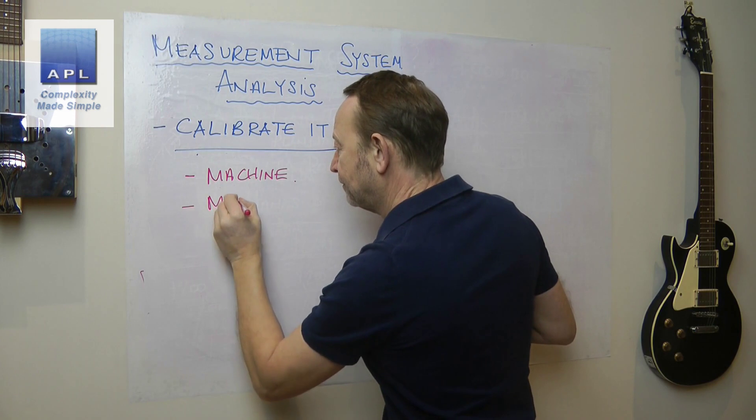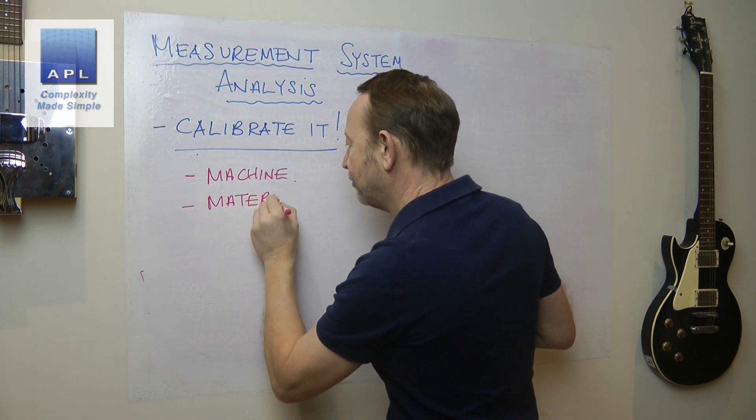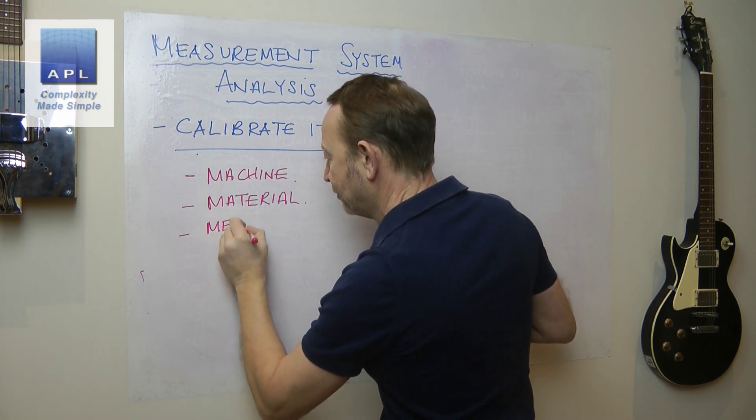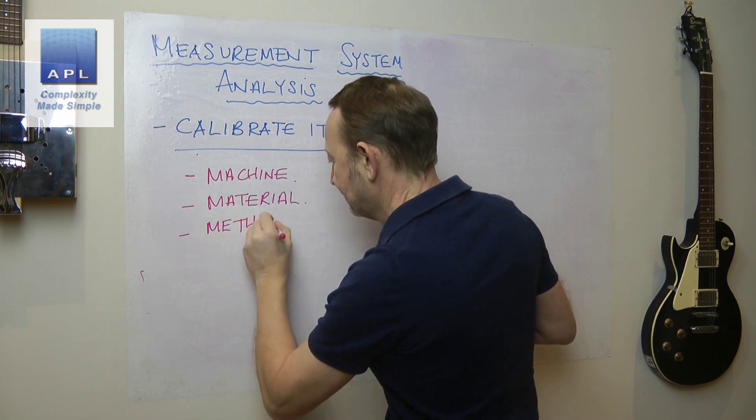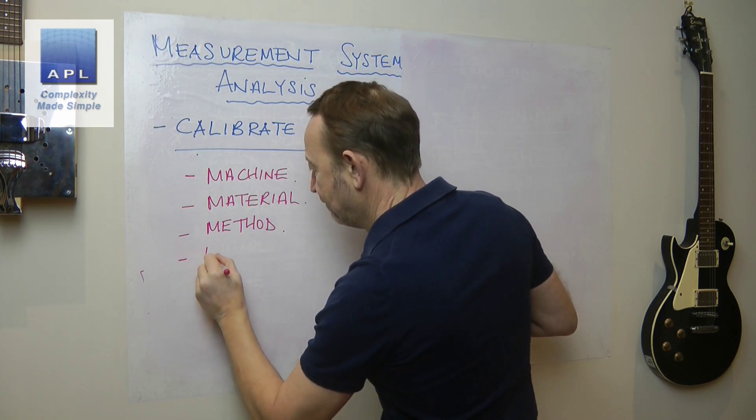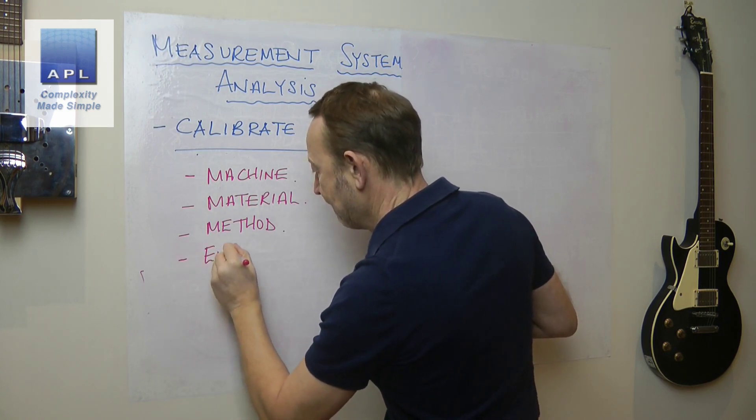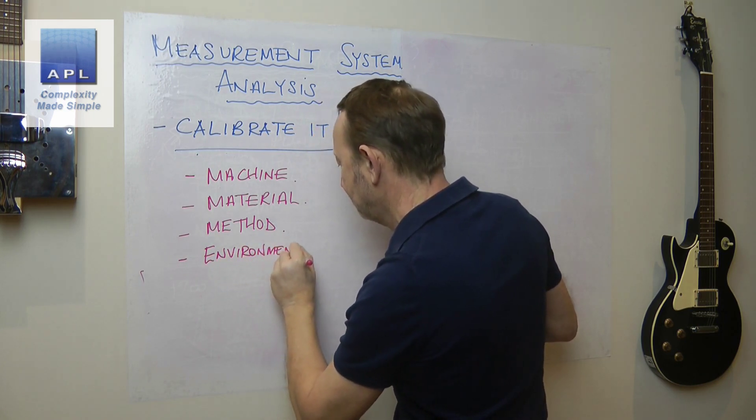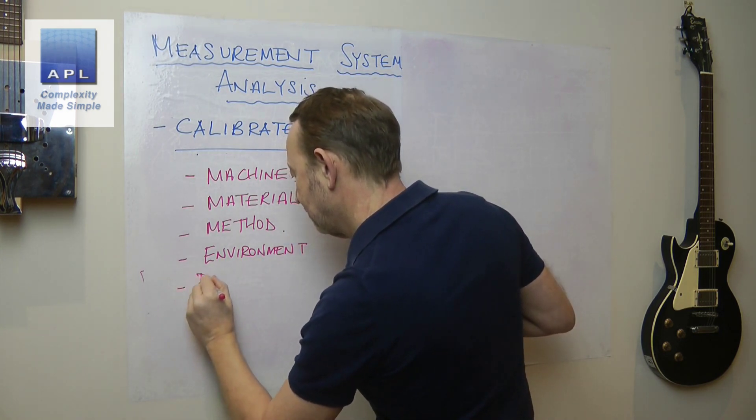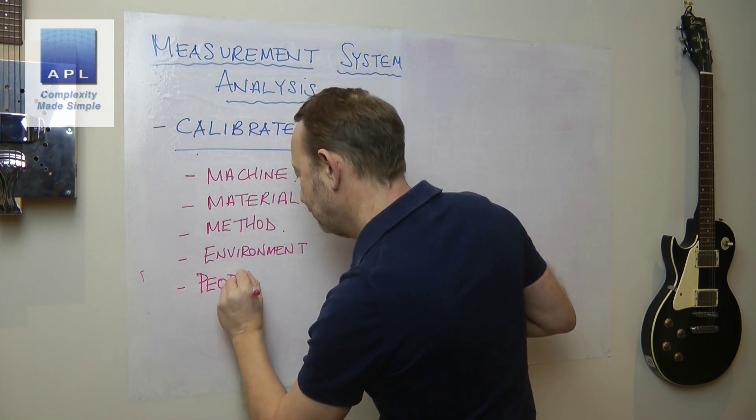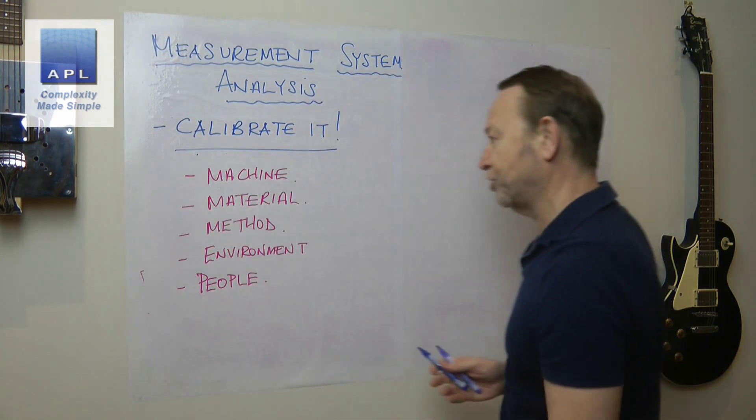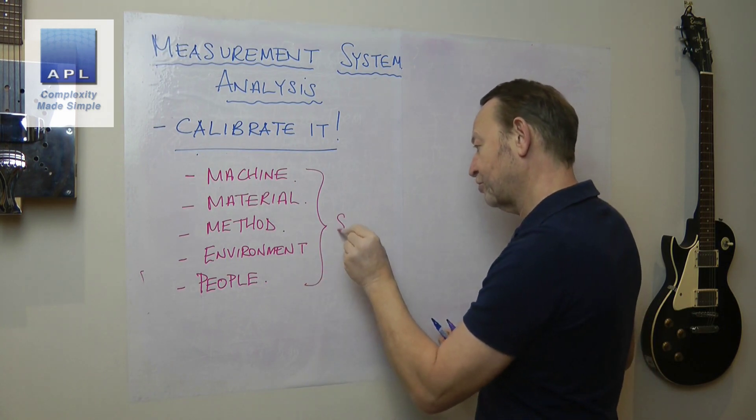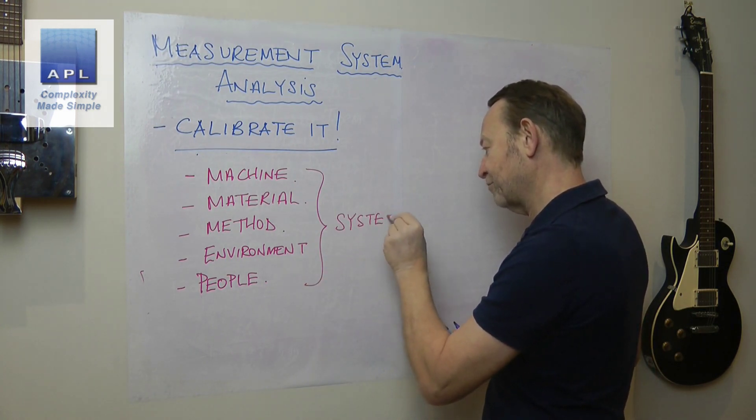But there is the item that you're measuring, the material. There is the method that you're using. There is the environment that you're in, and there is the machine, and there is the people who are using the machine. And those five elements constitute a measurement system.